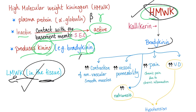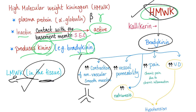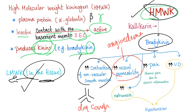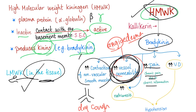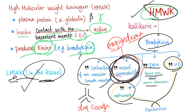What does bradykinin do? It contracts non-vascular smooth muscles such as the bronchi, causing bronchoconstriction — that's why you end up with dry cough. It's not productive cough because bradykinin is constricting the bronchioles, not secreting mucin. It also increases vessel permeability, which leads to angioedema — a medical emergency. Angioedema means accumulation of fluid in the interstitial space around vessels. It also causes chronic pain due to chronic inflammation, vasodilation leading to hypotension, and natriuresis leading to hypotension. So bradykinin leads to pain, hypotension, dry cough, and more.